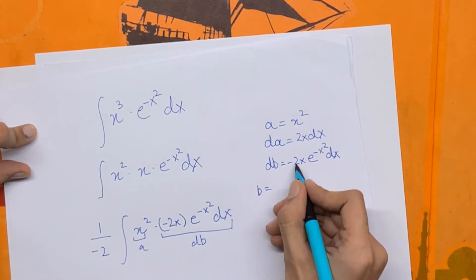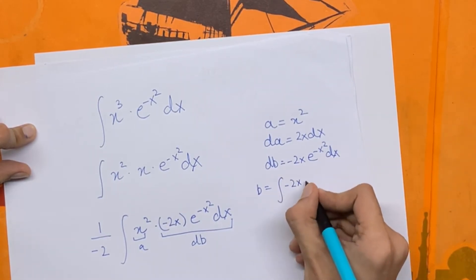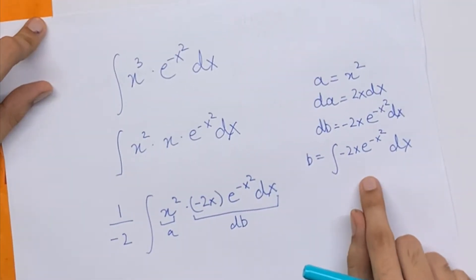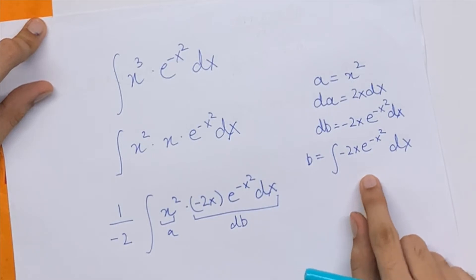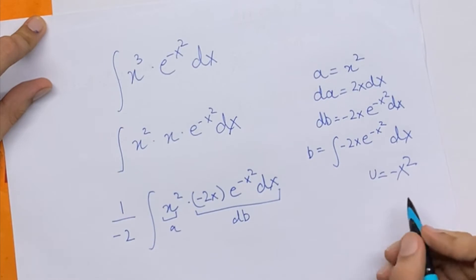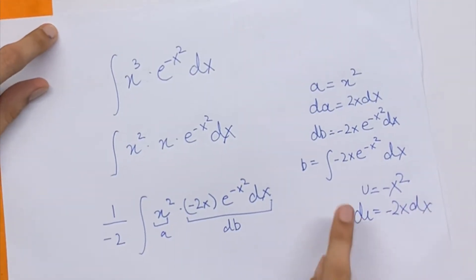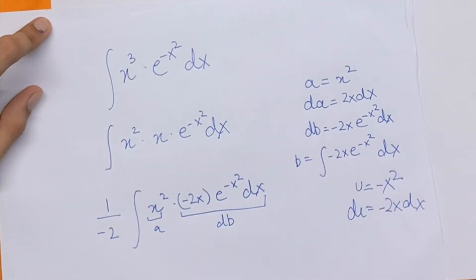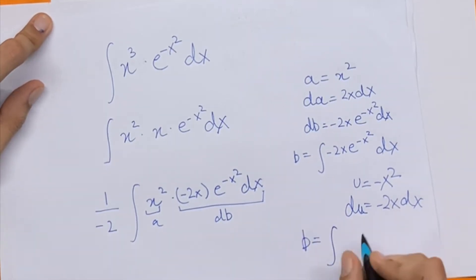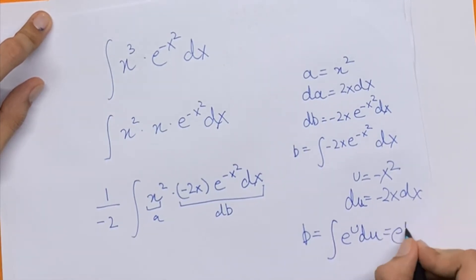To find b we'll have to integrate this expression — the integral of minus 2x e to the power minus x squared dx. To solve this integral I'm going to substitute minus x squared as u, so u is equal to minus x squared. That gives us du is equal to minus 2x dx, and we have minus 2x dx right here, so this is going to be an easy integral. We have b is equal to the integral of e to the power u du, which is just e to the power u.